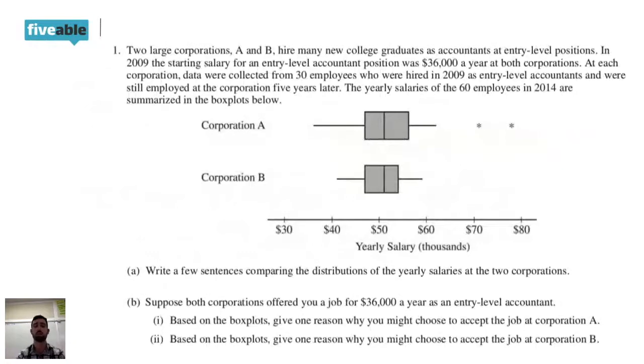But that only is for unusual. You do have to talk about center, spread, and shape every time. But unusual, if there's nothing unusual, you can say there's nothing unusual, or you just can leave it out. And we're done. Cool. Keep the questions coming. And I'll leave this up so you can kind of take a look at it.